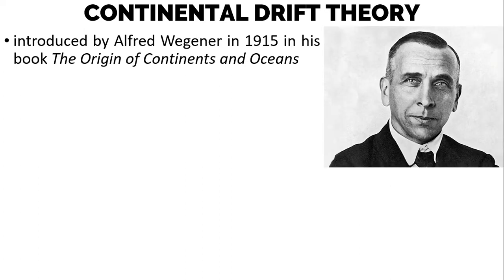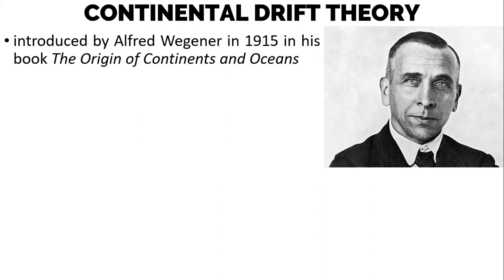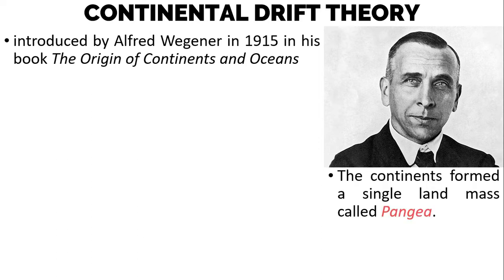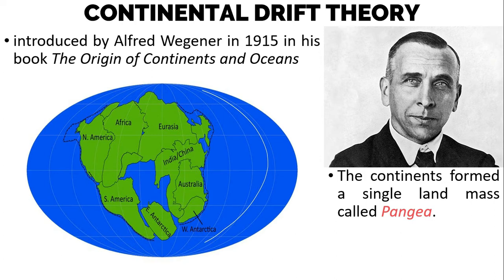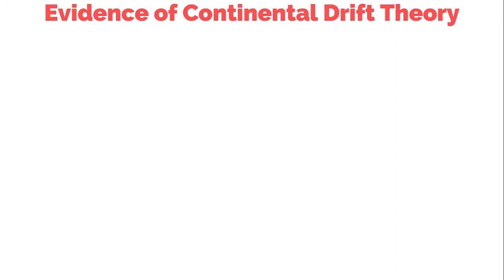In the early days, geologic phenomena such as earthquakes and volcanic explosions were thought to be caused by supernatural forces — it was thought that the planet was formed the way it is. Wegener proposed that long ago in the geologic past, the continents formed a single landmass called Pangea. This Pangea broke into several continents and drifted to their current positions.